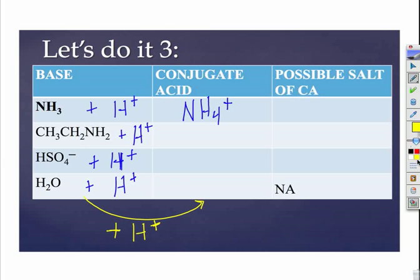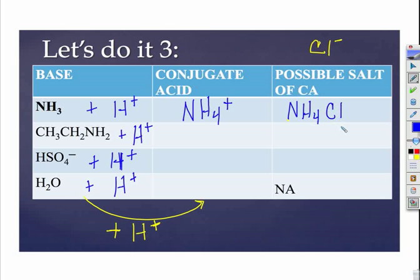What about a possible salt? We want some sort of cheap anion that doesn't interfere with too many things. Chloride is a good example, because HCl is strong — it doesn't stay as HCl — so chloride just swims around and probably won't do much. To get ammonium into solution, we could add ammonium chloride as a possible salt.